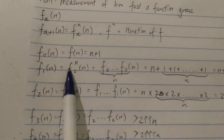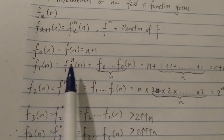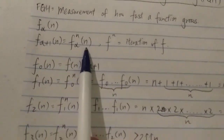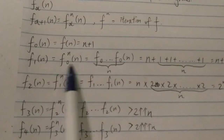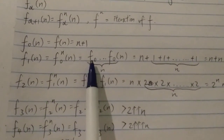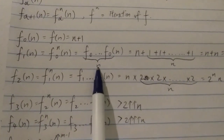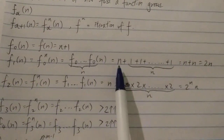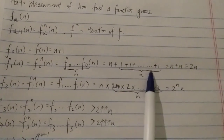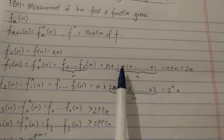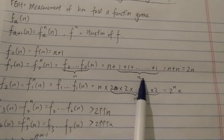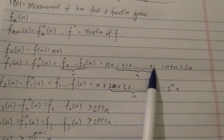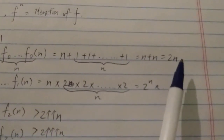The second level is F(1, n), which equals F(0, n) iterated n times applied to n. This equals F(0) iterated n times of n, which means n plus 1 applied n times — that is n plus n, which equals 2n.